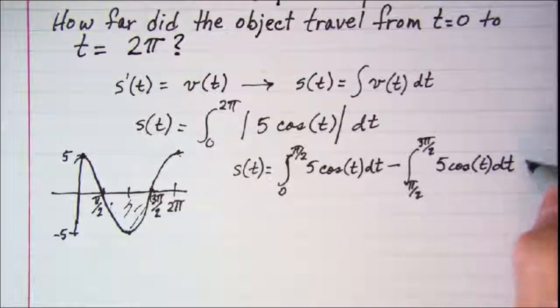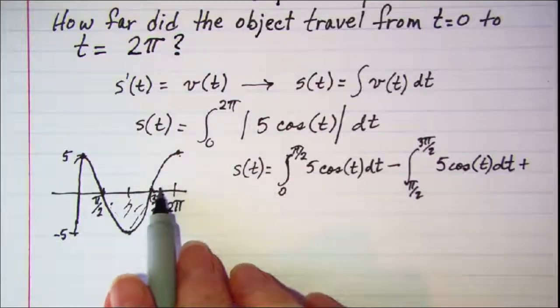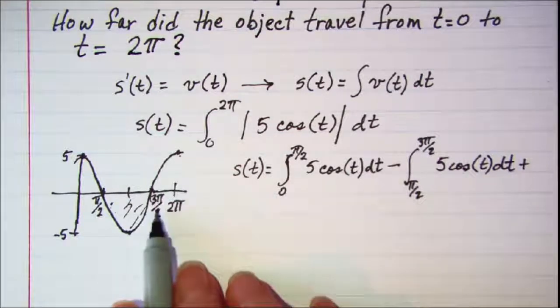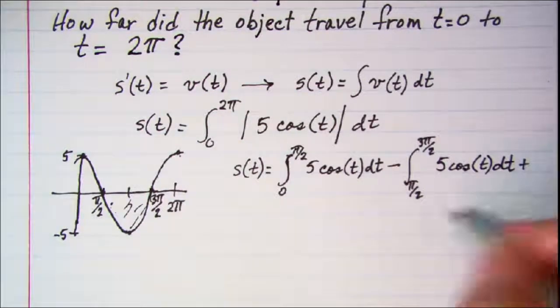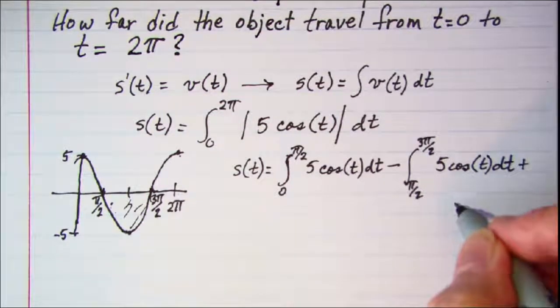And then we'll add the rest of it which goes from 3 pi over 2 to 2 pi.